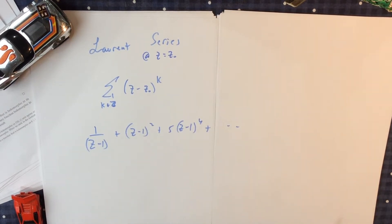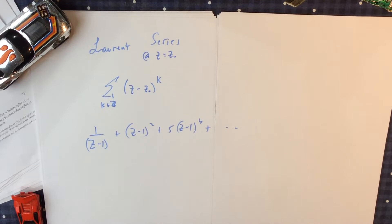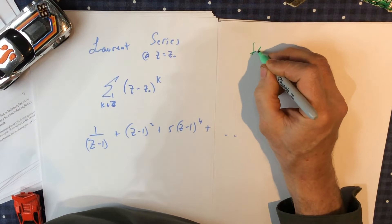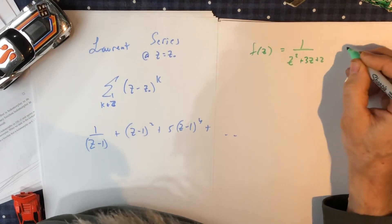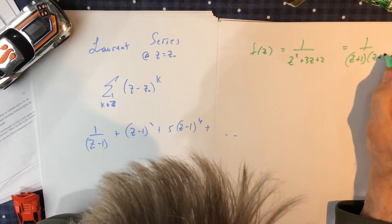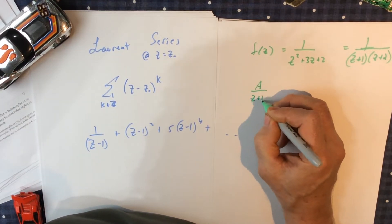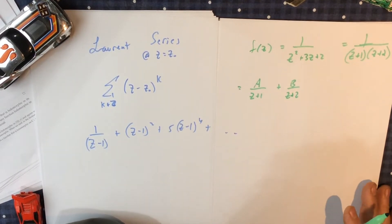Laurent series behave in a really neat way. They allow us to deal with functions we weren't able to work easily with before, and they are very useful in doing integrals. Let's look at a simple function: f(z) equals 1 over z squared plus 3z plus 2, which is 1 over (z plus 1)(z plus 2). If I was doing some integral involving this, I'd use partial fraction decomposition. But when we're done, we're not going to use the partial fraction decomposition — we're going to use something else.